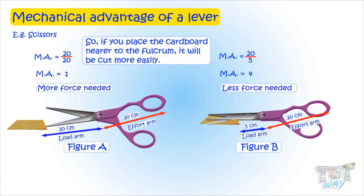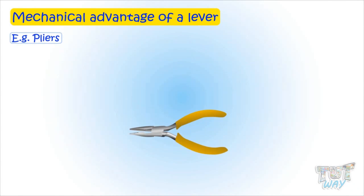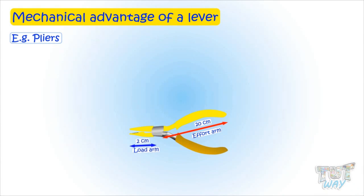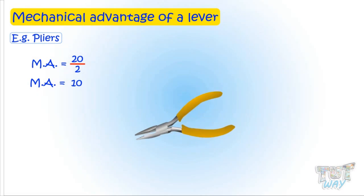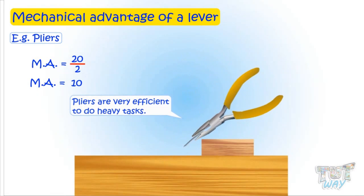Another example is pliers. Here the effort arm is 20 centimeters, whereas the load arm is much, much smaller — just 2 centimeters. So the mechanical advantage will be 20 divided by 2, that is 10. The applied force will be multiplied by 10, and this is the reason pliers are able to do tough jobs.